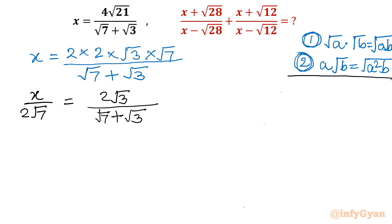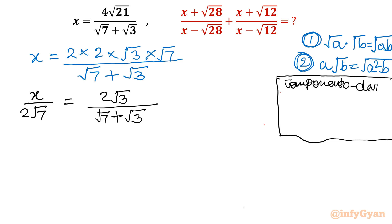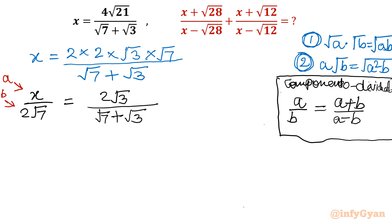Now an important rule — componendo and dividendo — is about to come. The rule states: for a given ratio a/b, we can write it as (a + b)/(a − b). Applying this to our equation, the LHS becomes (x + 2√7)/(x − 2√7). On the RHS, treating 2√3 as 'a' and (√7 + √3) as 'b', we add and subtract accordingly.